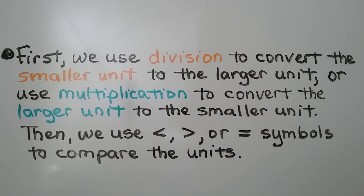To compare and convert customary units of capacity: first, we use division to convert a smaller unit to a larger unit, or use multiplication to convert a larger unit to a smaller unit. Then we use less than, greater than, or equal to symbols to compare the units.